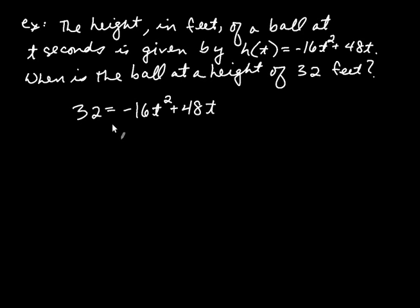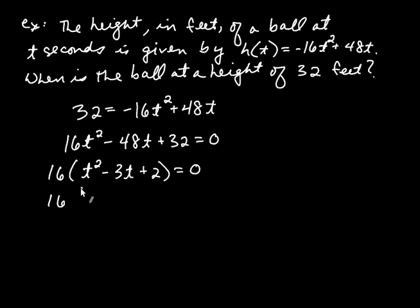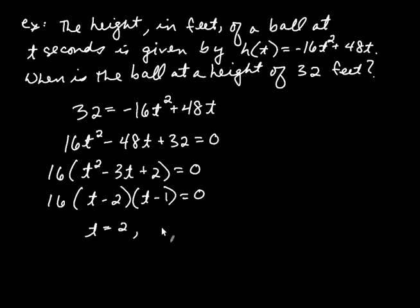We solve this the same way as our previous problems. First, get the right-hand side to be zero. Adding 16t squared and subtracting 48t from both sides gives 16t squared minus 48t plus 32 equals zero. Factoring out the GCF of 16 gives 16 times t squared minus 3t plus 2 equals zero. Continuing to factor: 16 times t minus 2 times t minus 1 equals zero. The constant doesn't affect the answer, so t equals 2 and t equals 1.